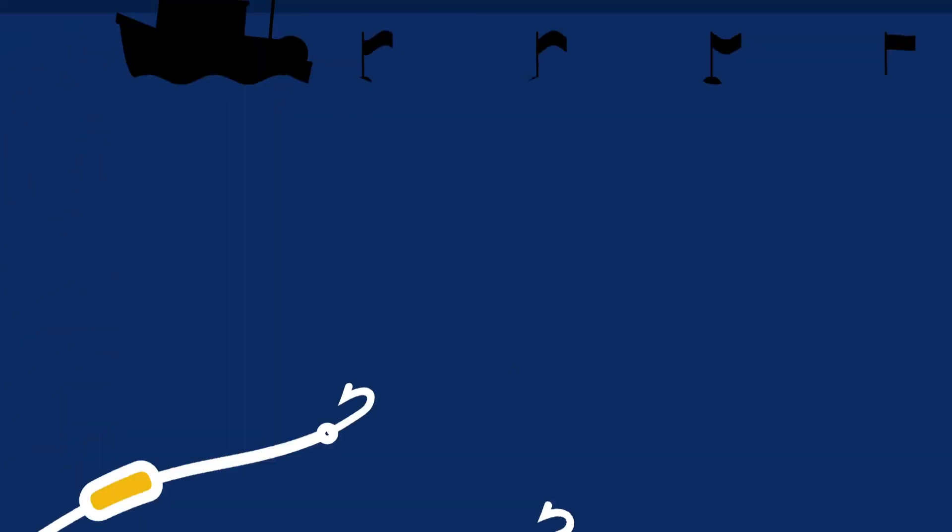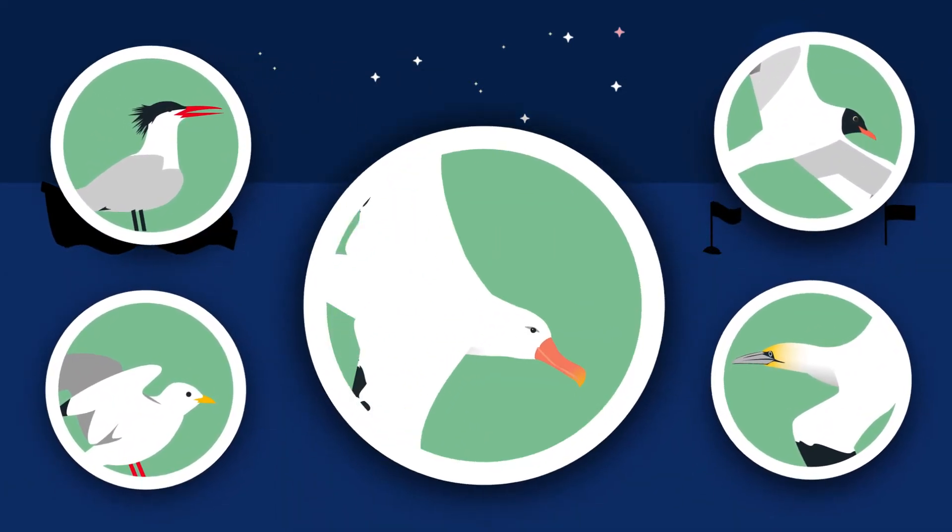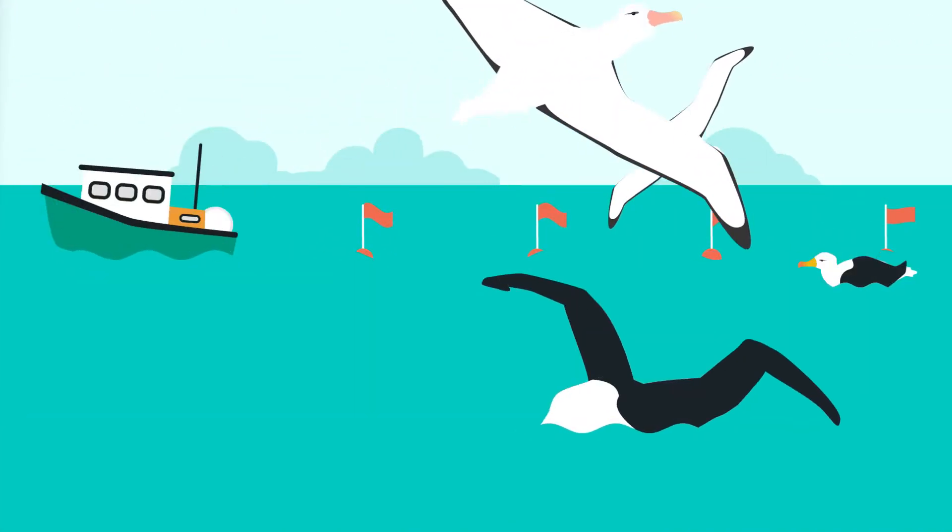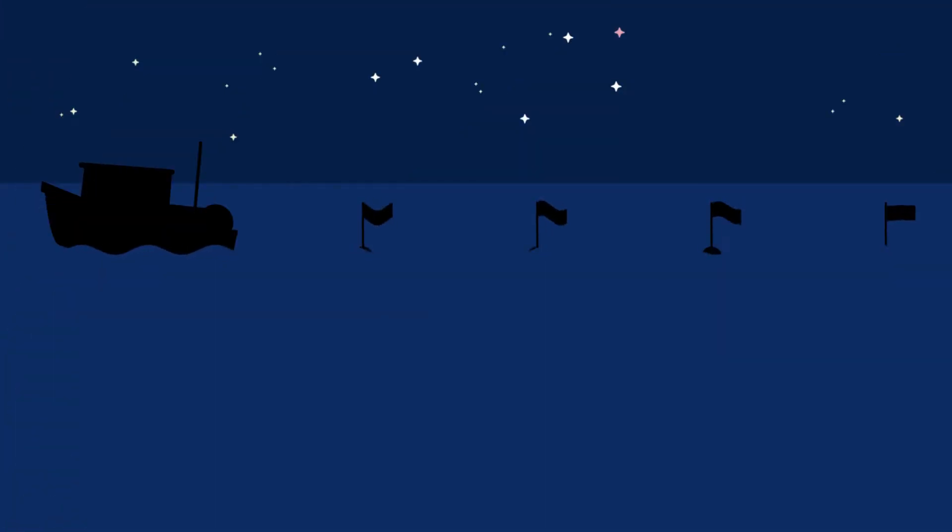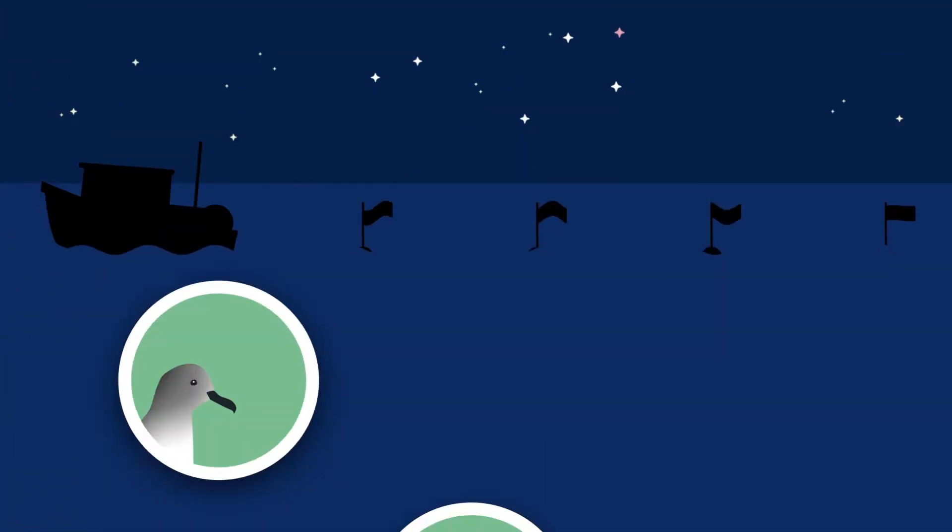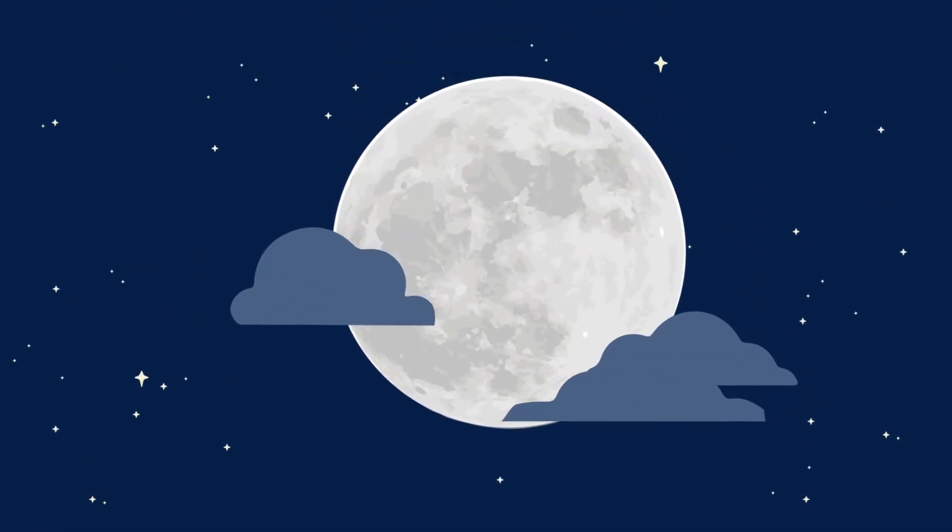Setting longlines by the cover of darkness is another great way to reduce bycatch because many seabirds, particularly albatrosses, feed much more actively during the day so there are fewer birds around at night to get caught. However, this is less effective for smaller nocturnal birds such as petrels or on moonlit nights.